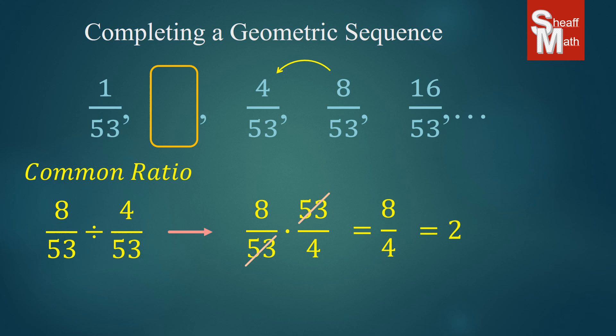So what's happening is those fractions are multiplying by 2 each time. So we go to that 1 over 53 and we multiply it by 2 or 2 over 1, which gives us 2 over 53.